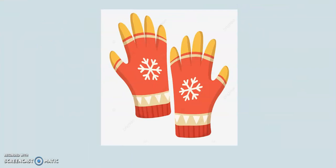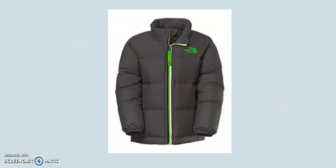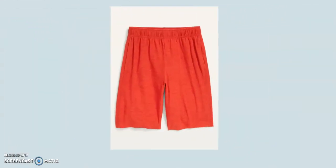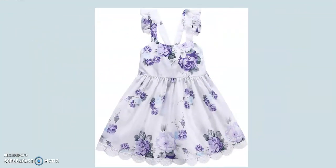What do you see? Gloves. What are they? They are gloves. What do you see? A jacket. What is it? It's a jacket. What do you see? Shirts. What are they? They are shirts. What do you see? A dress. What is it? It's a dress.